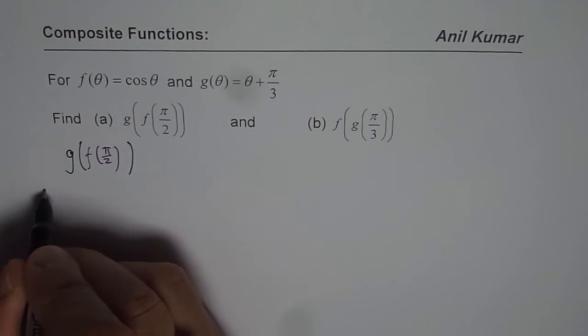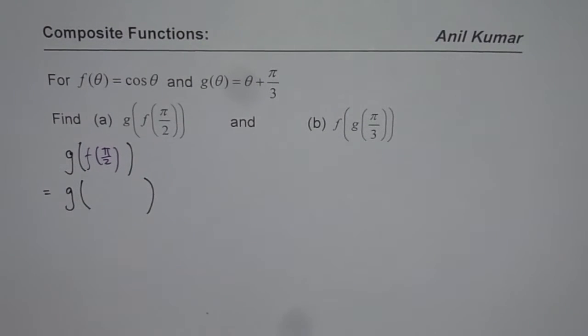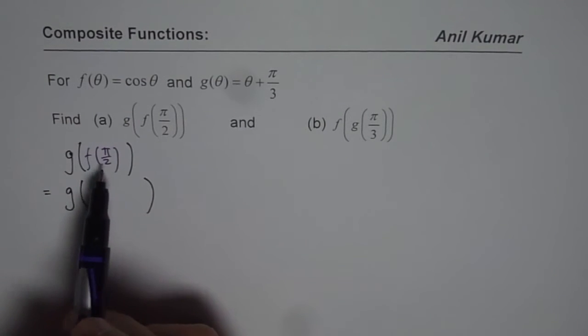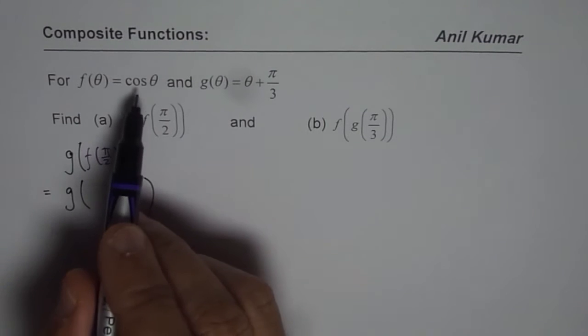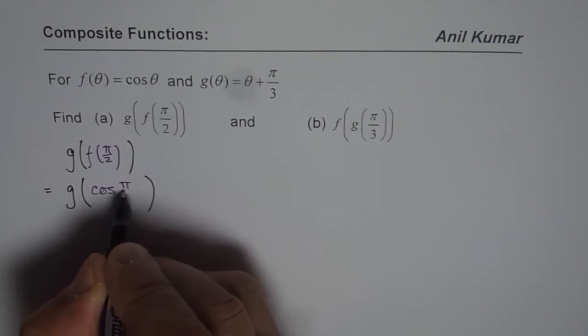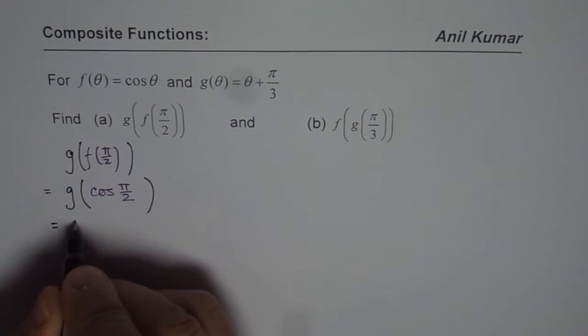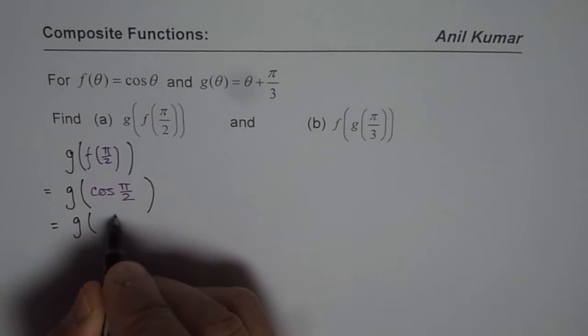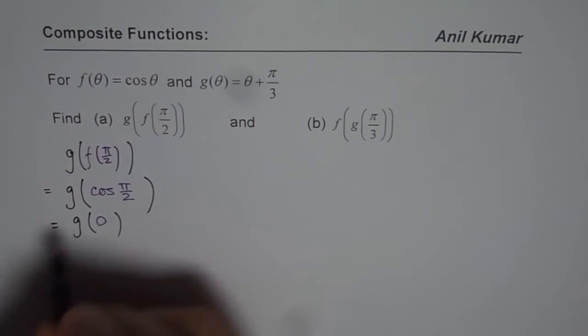In this case, we have to start with the inside function. Since f(θ) = cos θ, f(π/2) will be cos(π/2). We can write this as g(cos(π/2)). Now, cos(π/2) = 0, so we can write g(0).